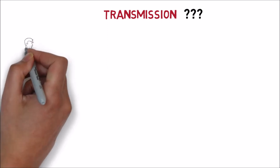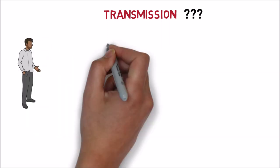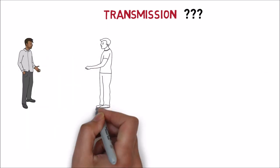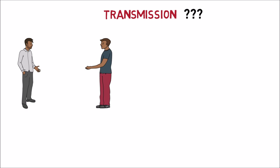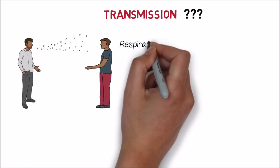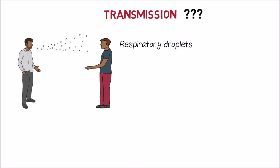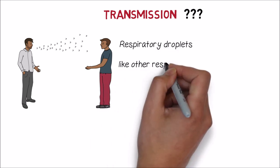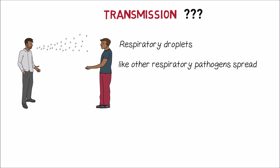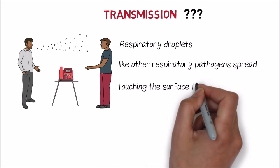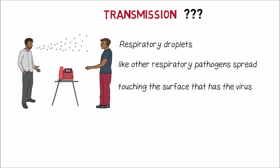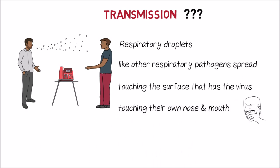The transmission of the virus is currently unknown. However, based on what is known about similar coronaviruses, it is believed that the virus spreads from person to person by close contact. Usually, the virus transmits via respiratory droplets produced when an infected person sneezes, just like other respiratory pathogens spread. Rarely, a person can also get the virus by touching a surface that has the virus on it, and then touching their own nose and mouth.